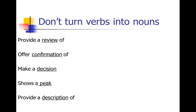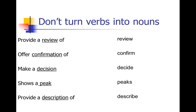Here are more examples that crop up all the time in the scientific literature: 'it provides a review of,' 'it offers confirmation of,' 'it makes a decision,' 'shows a peak,' 'provide a description of.' Again, these are all nice spunky verbs turned into nouns — review, confirm, decision, peak, description — paired with a really boring verb: provide, offer, make, show, provide. Turn those all back into those nice spunky verbs: review, confirm, decide, peaks, and describe. See how much better that is?